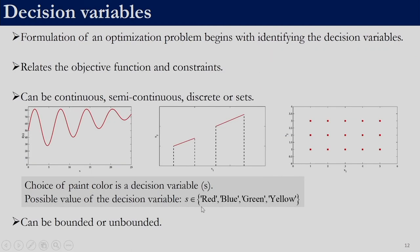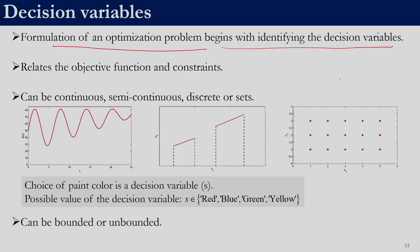The formulation of an optimization problem starts with identifying the decision variable — we need to know what can be changed so as to improve the objective function. If you are not allowed to alter anything, there is nothing to optimize. For example, if we say x has to take a value of 2, there is no choice for x. But if x can take any value in the real domain, we have a set of alternatives from which we need to choose the best value. Decision variables relate the objective function and constraints.